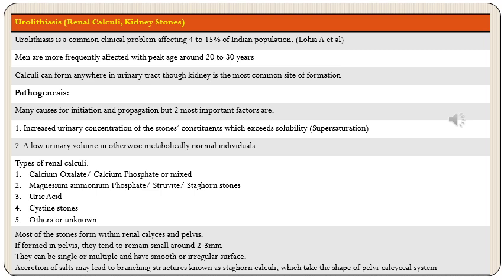Supersaturation means increased urinary concentration of stone constituents exceeding their solubility, causing precipitation. Low urinary volume in a metabolically normal patient also predisposes to stone development. Common types of renal stones are calcium oxalate, calcium phosphate, or mixed calcium oxalate-calcium phosphate stones; magnesium ammonium phosphate stones (also called struvite or staghorn stones); uric acid stones; cystine stones; and other stones.